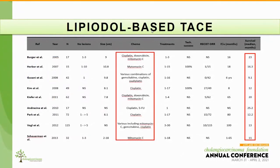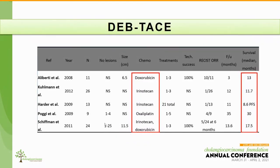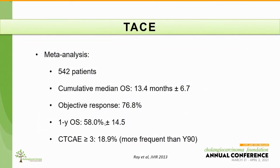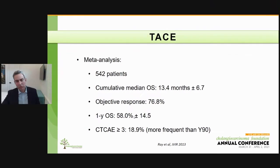Looking at the literature, the challenge in interpreting the data is that a number of different chemotherapeutic regimens are utilized for chemoembolization. Median survival ranges from as low as 11 months to as high as 25 months, but those reports differ in tumor burden, number of lesions, technical success, and response rates — making data interpretation very difficult. The same challenges in technique standardization remain even with drug-eluting beads, which have fewer reports since they are a newer technology.